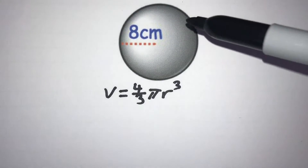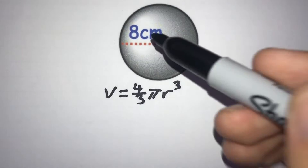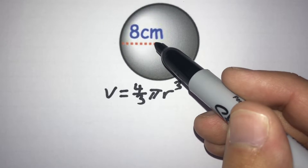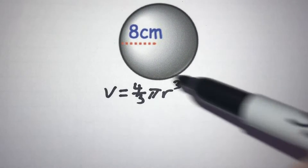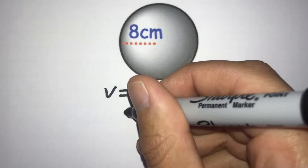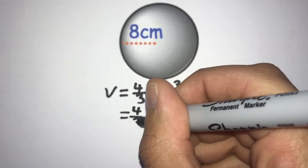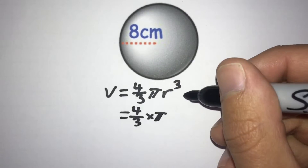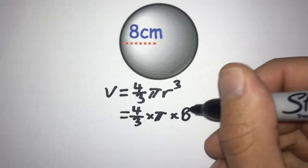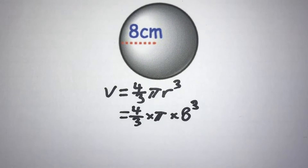In this first example, this sphere has a radius of 8 centimetres — that's the distance from the centre of the sphere out to the edge. So we need to put that 8 into our formula for r. We get (4/3) × π × 8³. So we've substituted the 8 in for r.